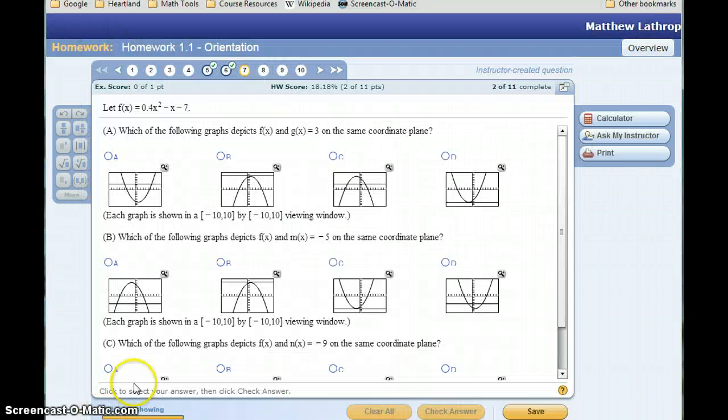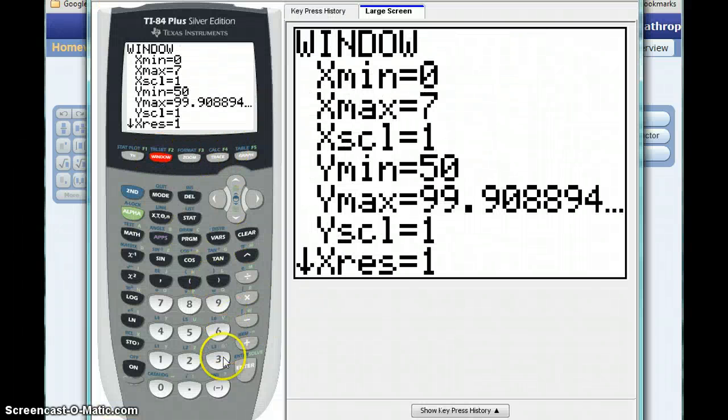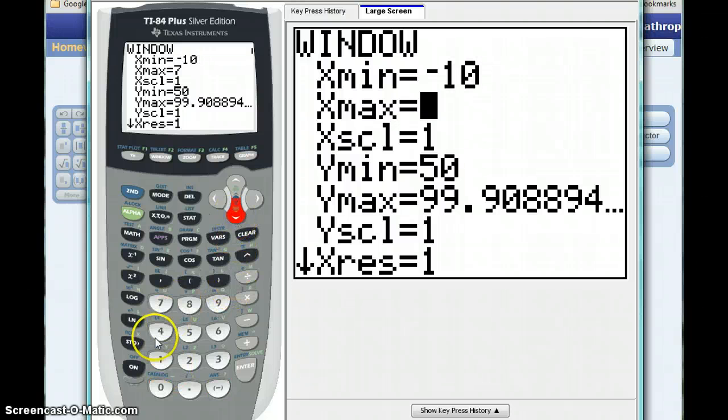We're also given a domain here. In this case each graph is shown in a negative 10 to 10 viewing window. If we go to that window screen, select xmin to be negative 10, xmax to be positive 10...